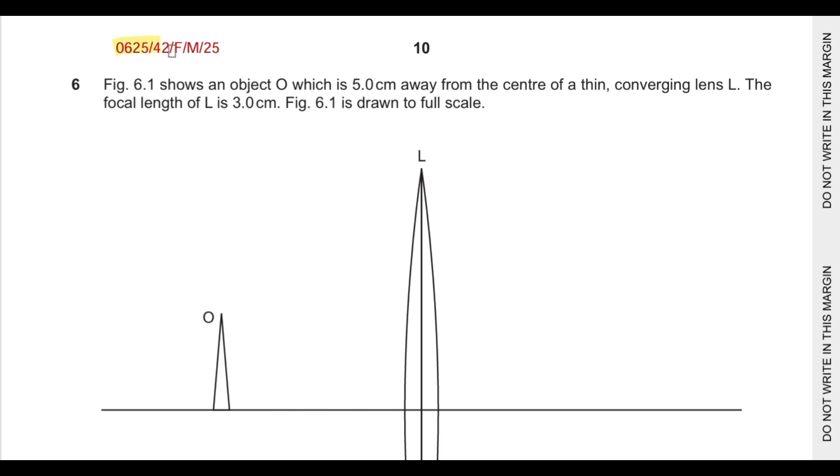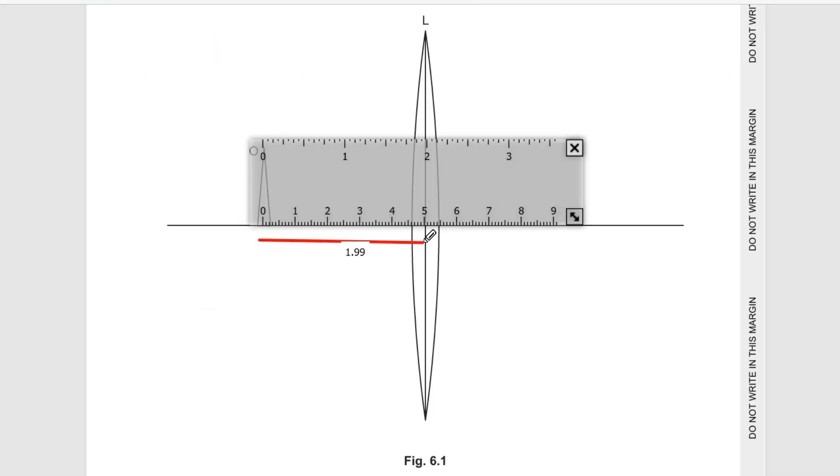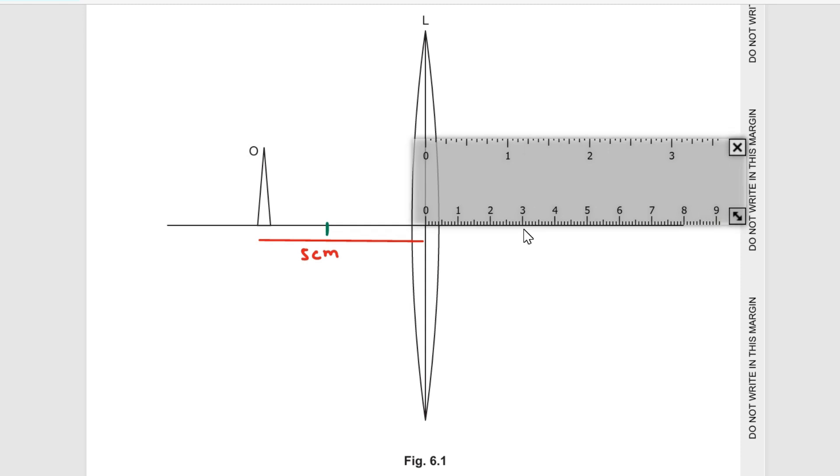Hello students, today we will do remaining questions of course code 0625 variant 2 February March 2025. Question number 6 says figure 6.1 shows an object O which is 5 cm away from the center of thin converging lens L. The focal length of lens is 3 cm. The distance between object and lens is 5 cm and the focal length is 3 cm. So I am marking focal length on both sides of the lens, 3 cm here from the center and 3 cm here from the center.